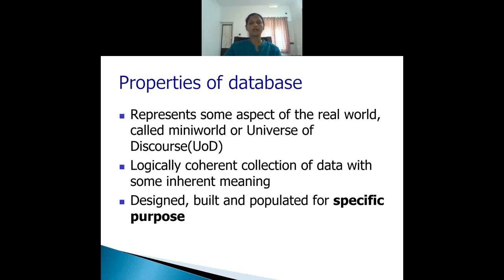What are the properties of the database? First, a database always represents the real world. When I formed the database of S3CT students, I collected information from this class — this class exists in the real world. That part of the real world is known as the mini world or universe of discourse. The second property is that it is a logically coherent collection of data with some inherent meaning. It has a specific meaning, and a random collection of data does not form a database.